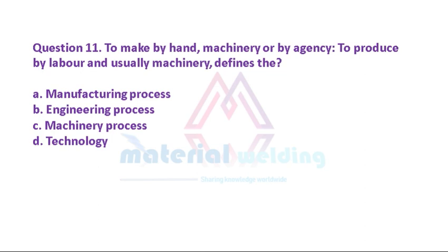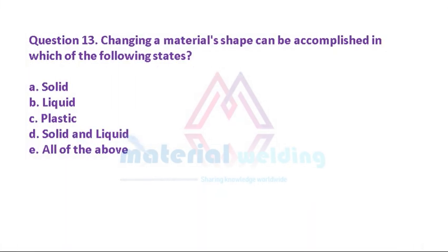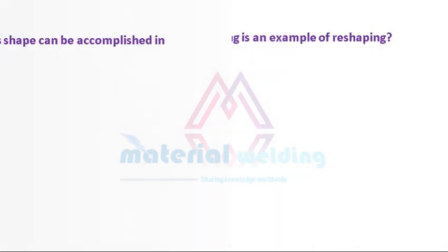Question 10 continued: C. It is generally used in applications where the loads are principally compressive. D. The low cost of cast iron cannot justify the high cost of NDT. Question 11: To make by hand, machinery, or by agency; to produce by labor and usually machinery — defines the: A. Manufacturing process. B. Engineering process. C. Machinery process. D. Technology. Question 12: Processing is one or more steps that change a product's: A. Shape. B. Properties. C. Chemical analysis. D. Shape and properties. E. All the above. Question 13: Changing a material's shape can be accomplished in which of the following states? A. Solid. B. Liquid. C. Plastic. D. Solid and liquid. E. All of the above.